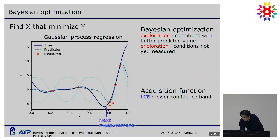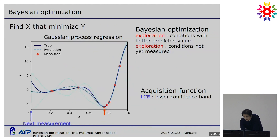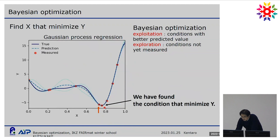In the case of LCB — lower confidence bound — this corresponds to the lower line of the blue band. The lowest position of this lower band is the next measurement condition. Then we perform the experiment, get the data point, and add it to the dataset. Again, we perform Gaussian process regression and calculate the LCB acquisition function. The next lowest point gives us the next measurement condition. By repeating this, finally we find the condition that minimizes the y value. This is the typical sequence of Bayesian optimization.